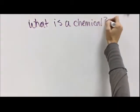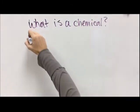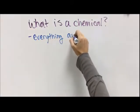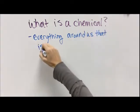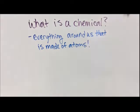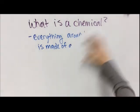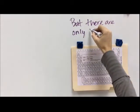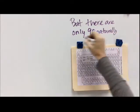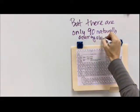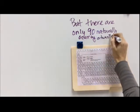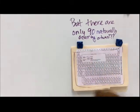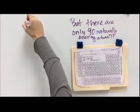The time has come to start talking some real chemistry. The first question we need to answer is: what is a chemical? Everybody talks about being really scared of chemicals, but the truth is everything around us is a chemical — it is matter, because it's made of atoms. When we look at atoms, we just learned about how to build them and talked about the periodic table.